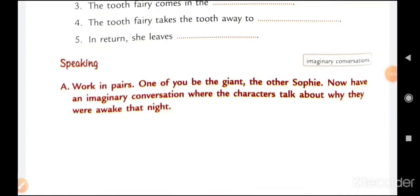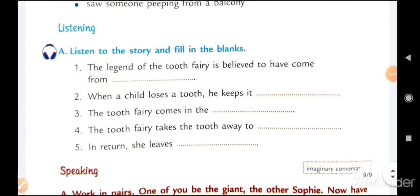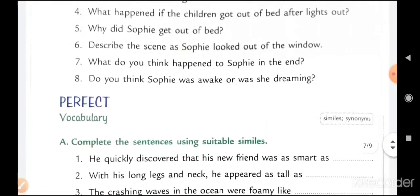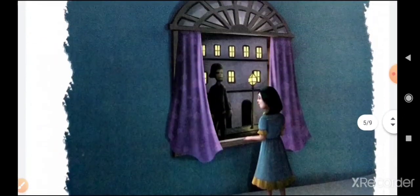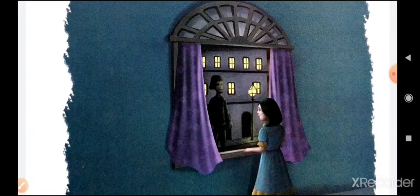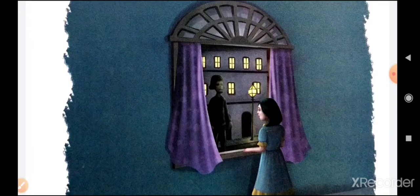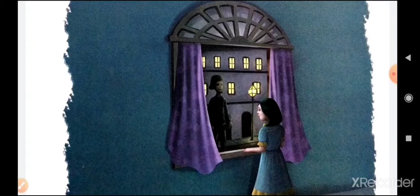Now students, let me summarize the story. Listen carefully. As the story unfolds, a young girl named Sophie is lying in bed in an orphanage dormitory. She can't sleep because of the moonlight entering the room through the gap in the curtains.